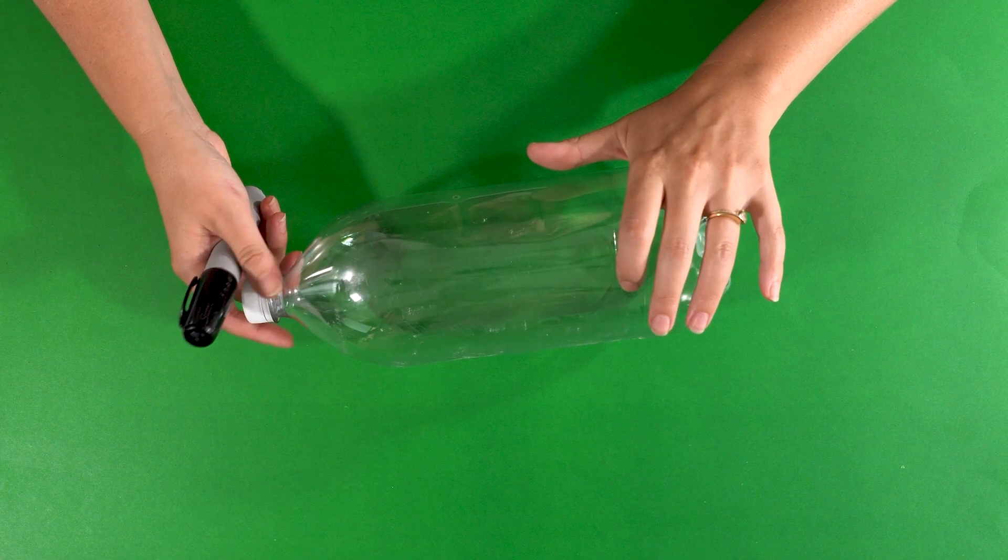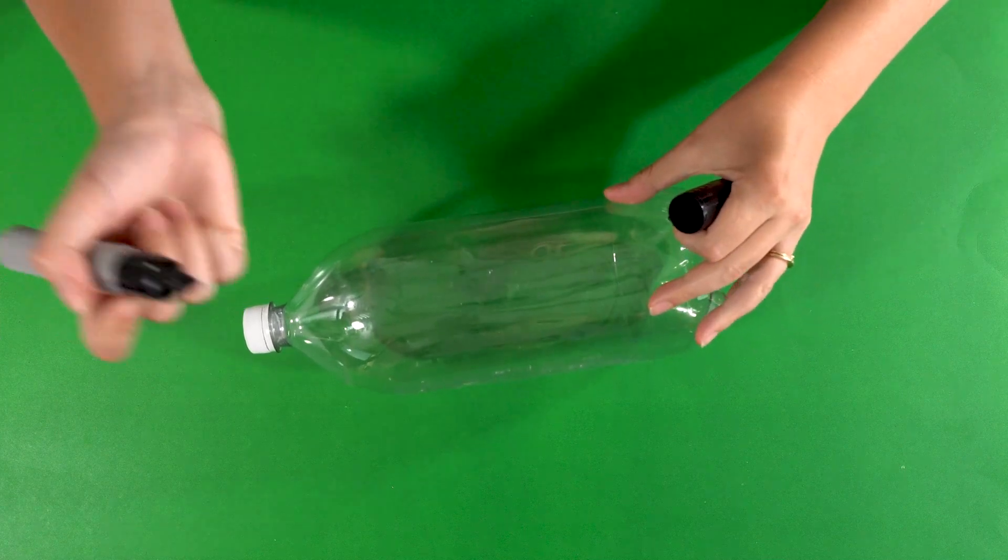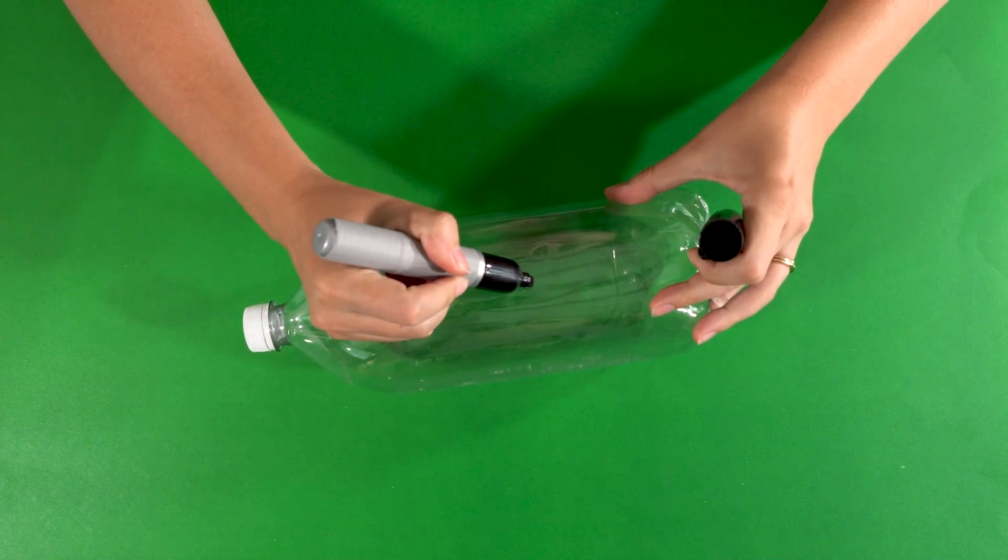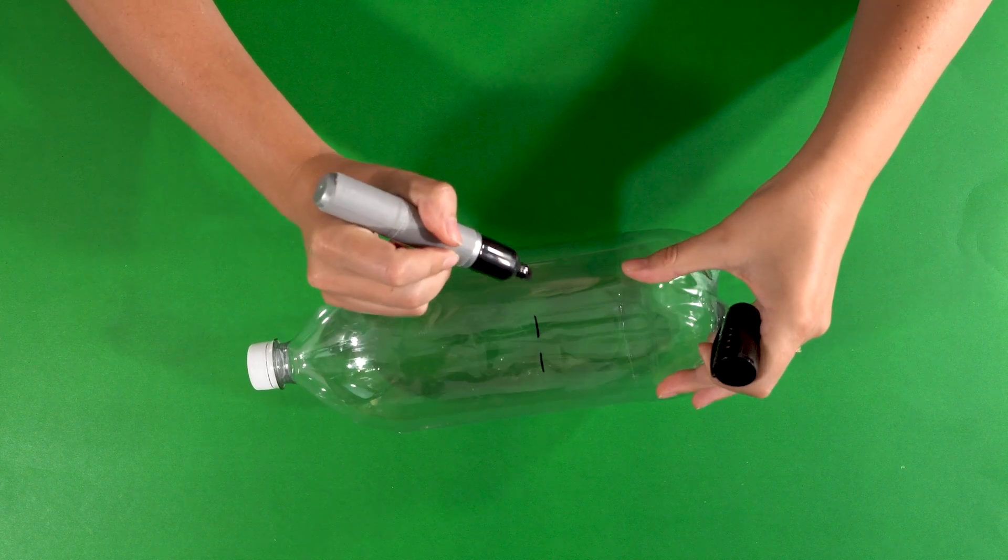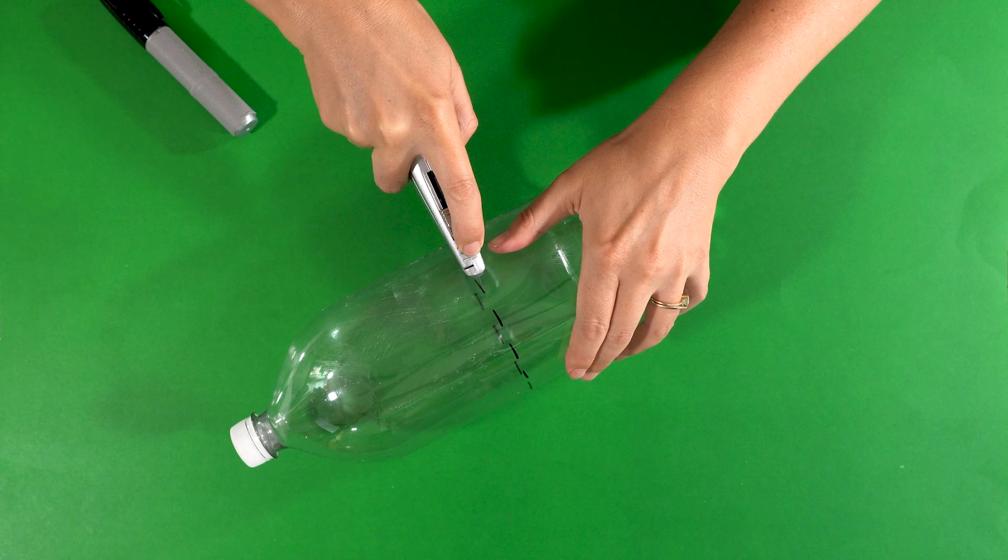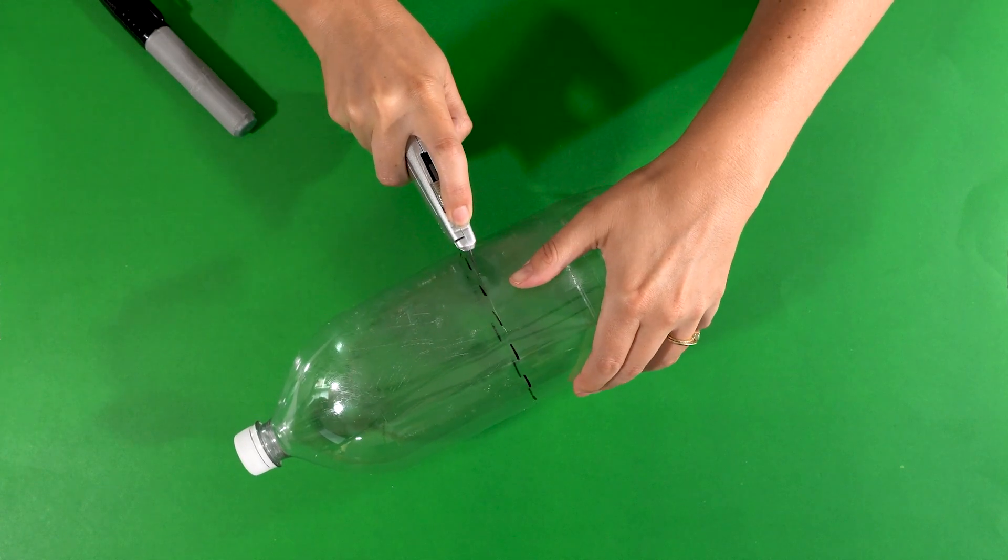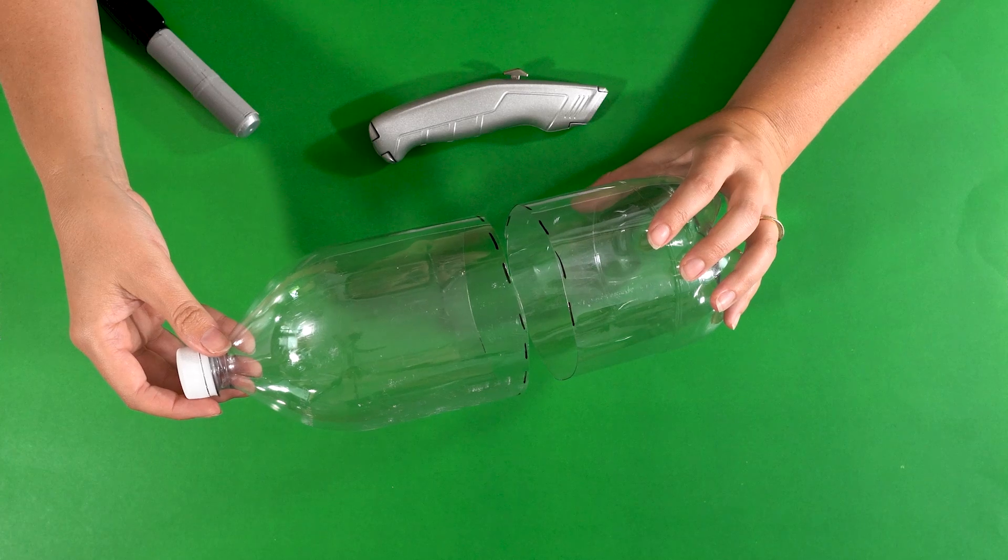All right kids, to start off with we are going to take both of our soda bottles and you will need your parents for this step. Using our marker we're going to make a line to make it easier to cut using either a pair of scissors or a utility knife. Now we are going to carefully cut our bottle using our parents' help.